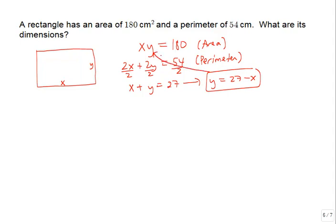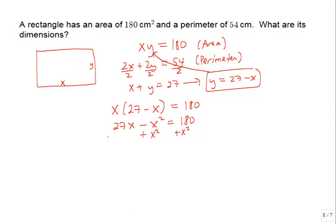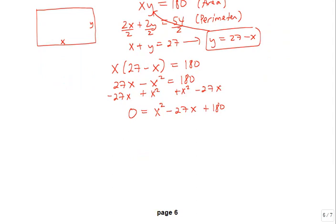Substituting y equals 27 minus x into xy equals 180: x times the quantity 27 minus x equals 180. Distributing: 27x minus x squared equals 180. Rearranging with the x-squared on the right and setting it in descending order: x squared minus 27x plus 180 equals 0. This is quadratic, and we already have zero, so we try factoring.